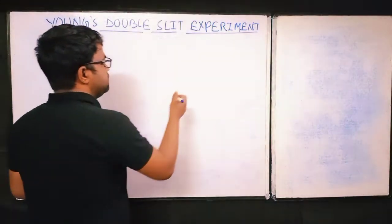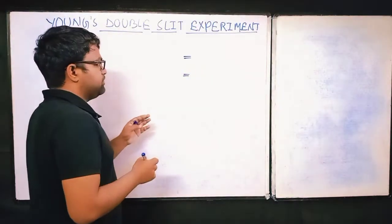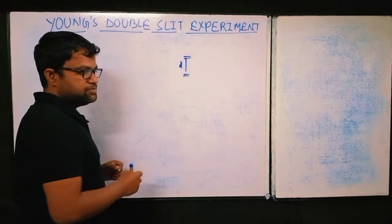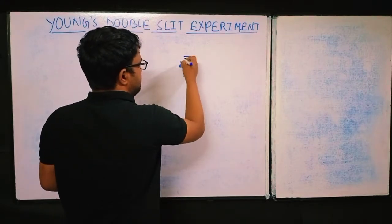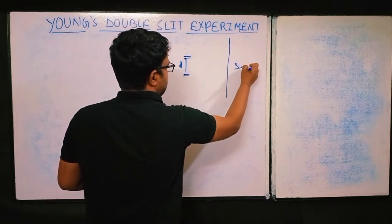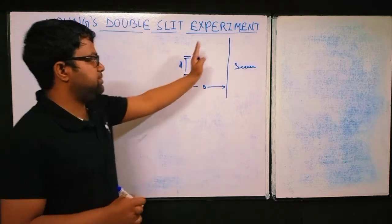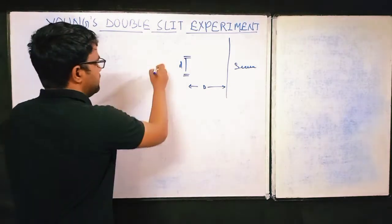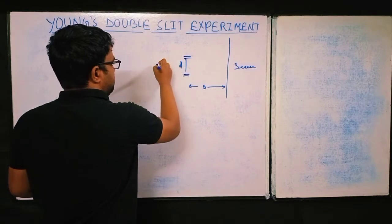Young made two slits — narrow gaps, very small. The distance between the two slits is called small d. He placed a screen at a capital D distance from the slits, kept parallel to the slit plane. He then allowed light to come from a source through the narrow gaps.